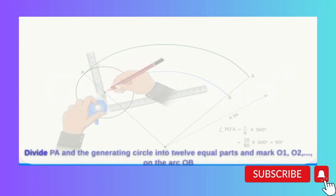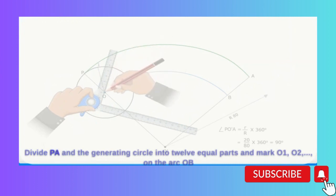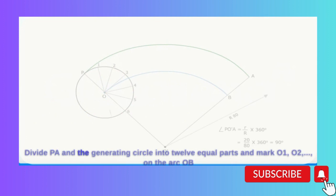Divide PA and the generating circle into 12 equal parts and mark O1, O2, etc. on the arc OB.